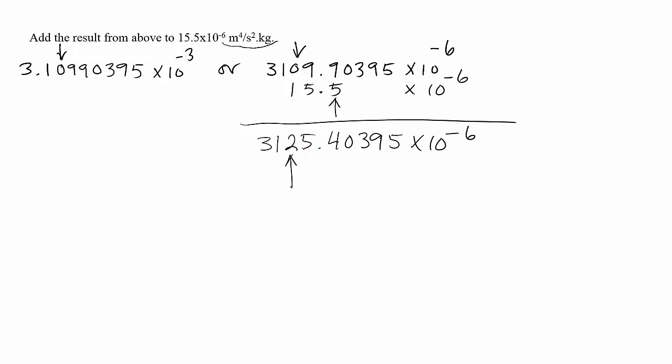And I am gonna round them. Because this is 5 and this is 4, so if I remove them, because this 2 is even, when I remove 5, 2 stays 2. So the answer is 3125×10^-6 m^4/s^2·kg.